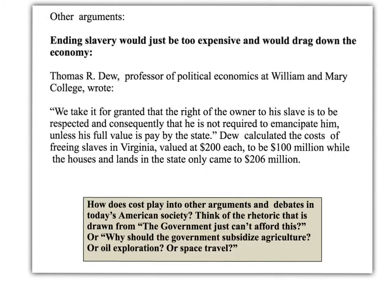There are other arguments. One was that it would simply cost too much to end slavery — it would drag down the economy. Professor Dew at William & Mary tried to calculate the cost, looking at the situation in Virginia. He basically said that if you estimated the cost at $200 per slave to buy him back, it would total $100 million, while all the houses and land in the state only came to $206 million. Think about this issue of cost. How often is this brought up in today's society? 'We could do that, but it would cost too much.' Many people say the government can't afford things — why subsidize agriculture? Why go into space? This is an argument used over and over again in various American debates.